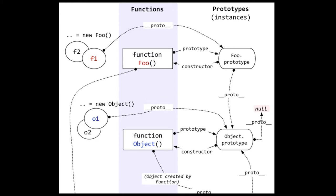Every proto chain recursively traces back until __proto__ becomes null: __proto__ points to the function prototype, then to the Object prototype, and then Object prototype's __proto__ is null. The same applies when using Object directly — two objects created from the Object function have their __proto__ directly pointing to the Object prototype, and doing __proto__ again gives null, because they were created from capital-O Object rather than from foo.